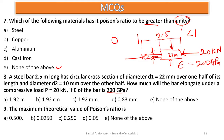Number twenty-four: the value of Poisson's ratio for cast iron is always between 0.25 and 0.27. You have to memorize these constants.